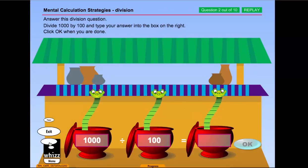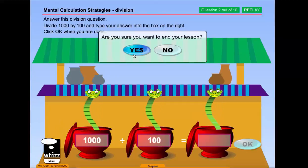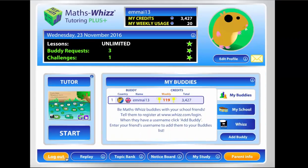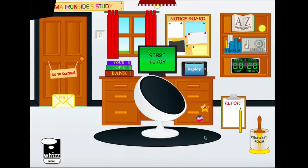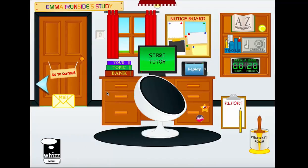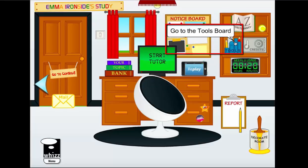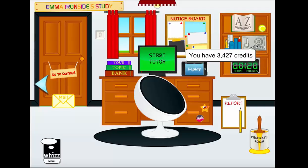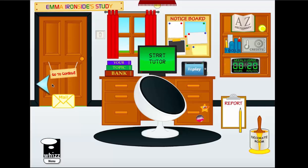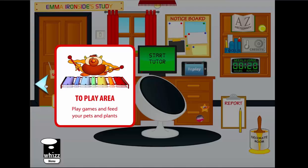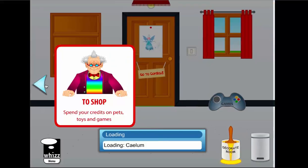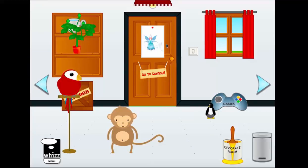Let's look at a couple of other components of Emma's learning environment back in her study. There's also an online dictionary of mathematical terms and an interactive board. Emma has earned over 3,000 credits — every exercise and test she's undertaken has awarded her a credit based on both achievement and how hard she's worked. With those credits, she can buy pets, toys and plants. It's a reward system — we want to build confidence and make maths engaging for children. As you can see, she's populated her play area and bought one of these parrots.